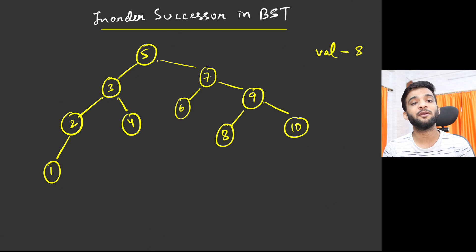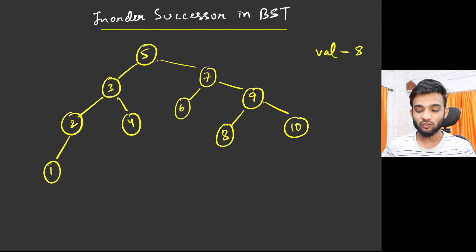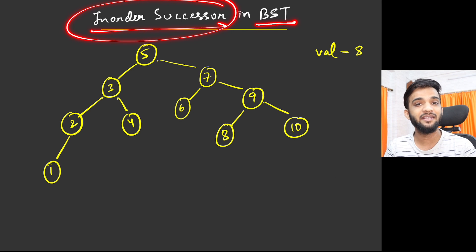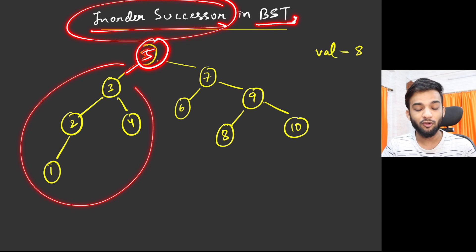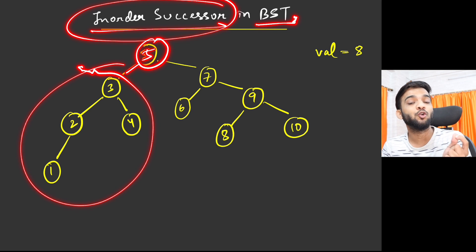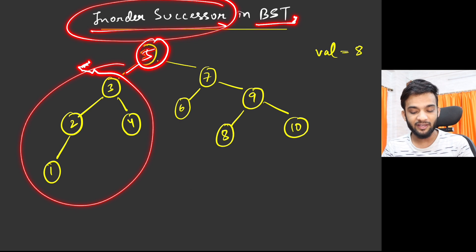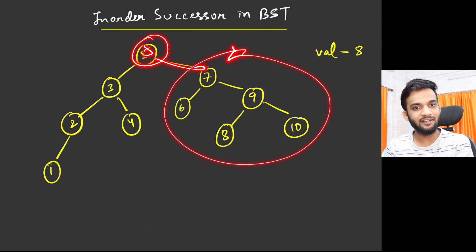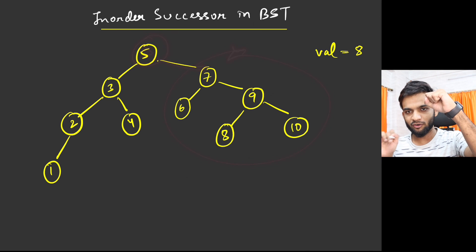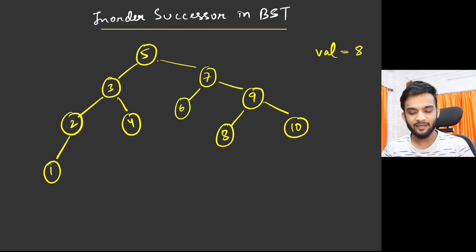Hey everyone, welcome back to the channel. Today we will be solving the problem of finding the in-order successor in a binary search tree. A binary search tree is defined such that for a given node, everything to the left is smaller than that node's value and everything to the right is greater — smaller on left, greater on right.